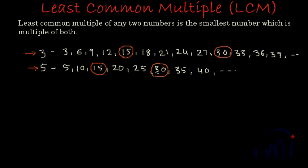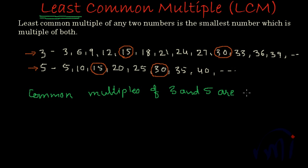So 15 and 30 are the common multiples of three and five, but what are we talking about? We are talking about the least common multiple. The common multiples of three and five are 15, 30, and a few more, but which is the least? 15 is less than 30, so 15 will be the LCM or least common multiple of three and five.